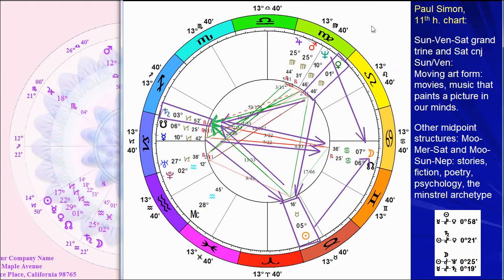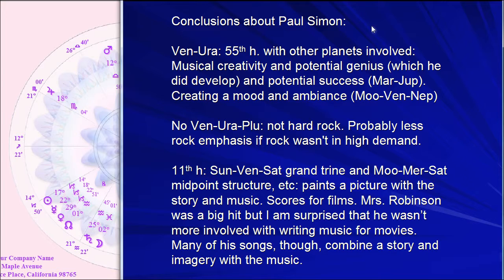That is Paul Simon. We don't see the heavy rock-out combinations with the heavy Venus-Uranus-Pluto that we see in some of the more intense rock-style musicians. The Venus-Uranus 55th harmonic with other planets gives the potential creative genius, which he did develop, creating the mood and ambiance emphasis with Moon-Venus-Neptune. There's no Venus-Uranus-Pluto — it's Venus-Uranus combining with other things and other patterns. It's not an emphasis on hard rock. Probably if he'd been brought up in a different environment where rock music wasn't in such high demand, there'd be even less emphasis on the rock thing. He does have the Venus-Uranus conjunction in the 55th harmonic chart.